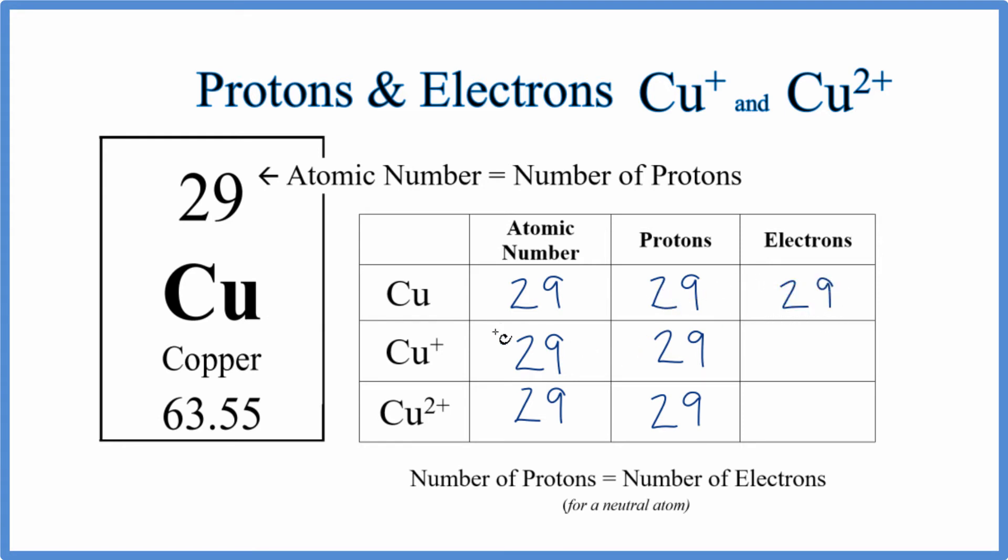When we have an ion, if we have a positive charge, you can assume there's a one written here. They don't write it, but it's there. When we have the positive charge, this means we've lost one electron. Think of it this way.